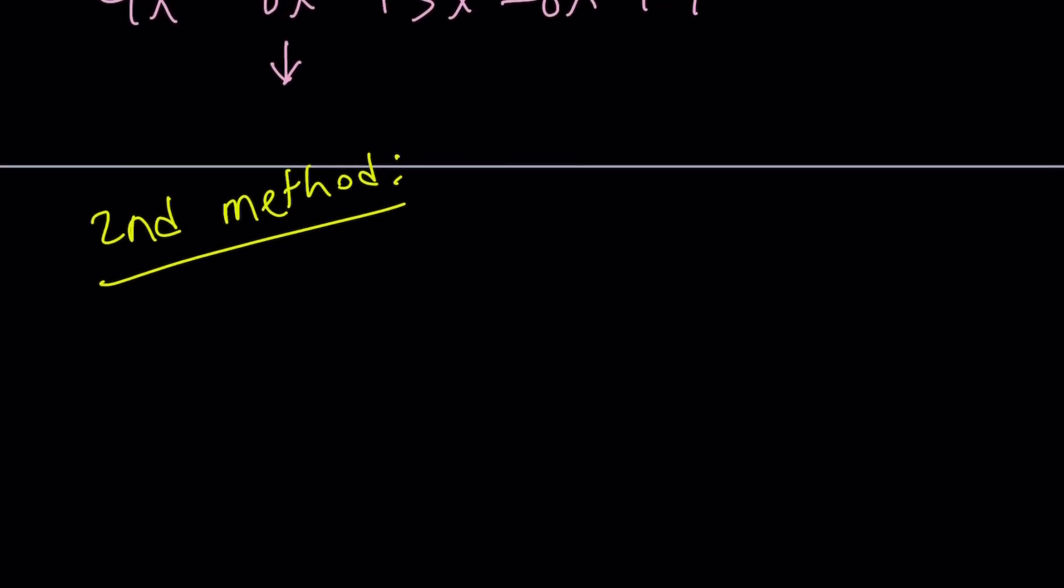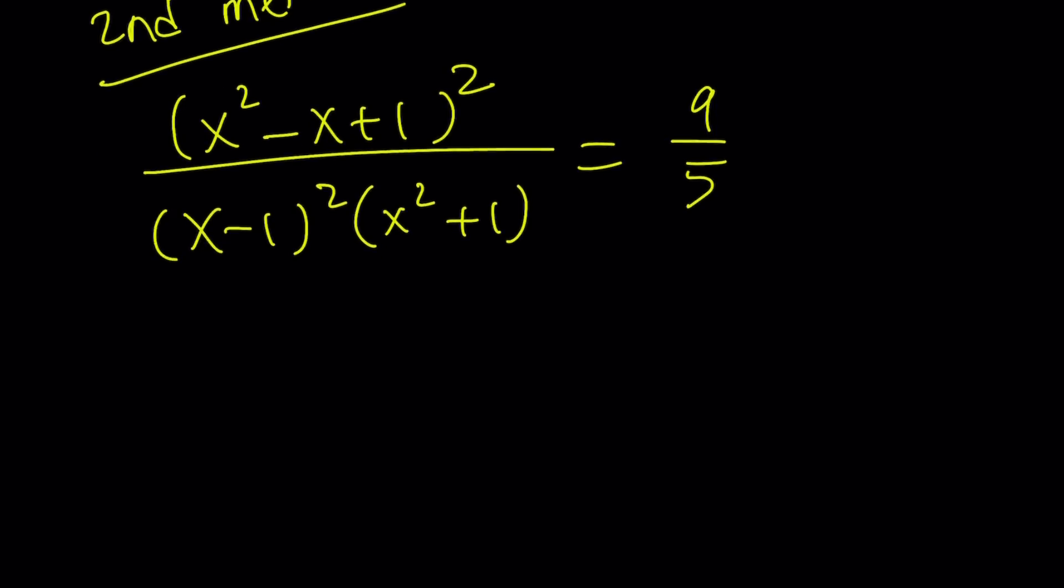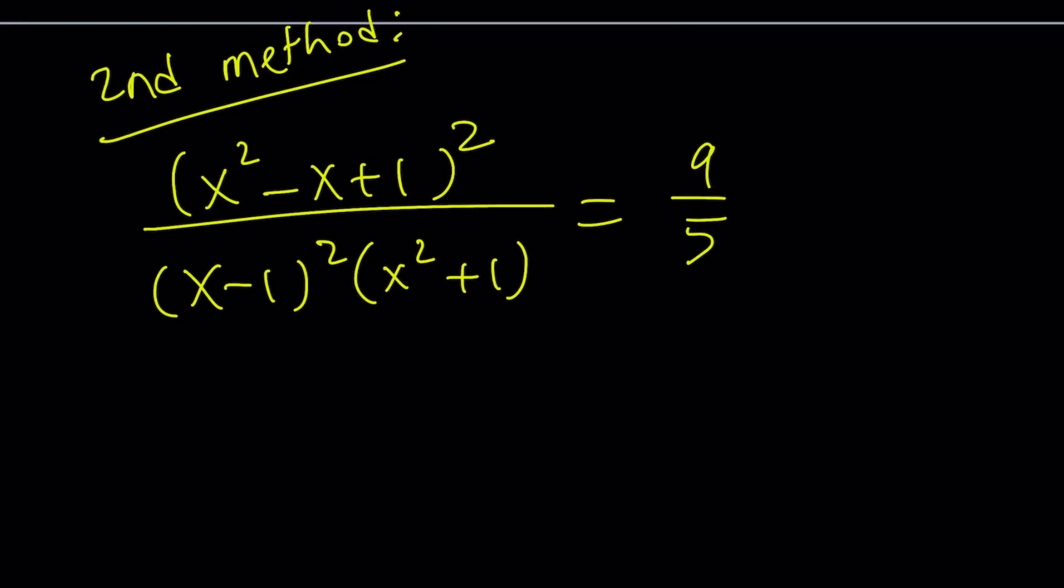Here's what we're going to do. Let me rewrite the original problem: x squared minus x plus 1 squared, divided by x minus 1 squared times x squared plus 1, equals 9 over 5. Instead of doing this, we're going to handle the problem differently. Of course we're going to cross multiply again. So let's do it: 9 times x minus 1 squared, and I'd like to expand it but not distribute it of course. And it's going to equal that.